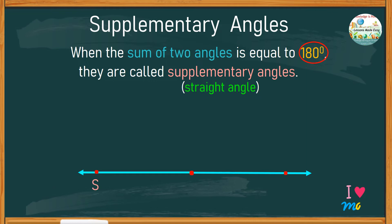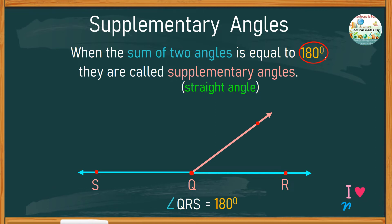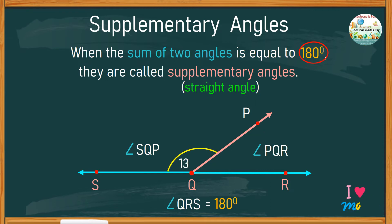Let's study this straight angle SQR with a measurement of 180 degrees. If we split this angle into two by adding one side, we now have two angles and they are called supplementary angles. Let's name the side QP. So angle SQP is the supplement of angle PQR. If the measurement of angle SQP is 135 degrees, what would be the size of angle PQR? If these two angles together make 180 degrees, subtracted by 135, therefore the remaining angle is 45 degrees.